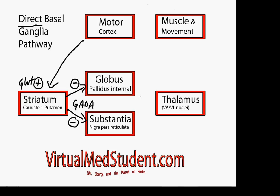At this point it's important to realize that the normal function of the globus pallidus and the substantia nigra is to actually inhibit the thalamus, and that inhibition is also via the neurotransmitter GABA.